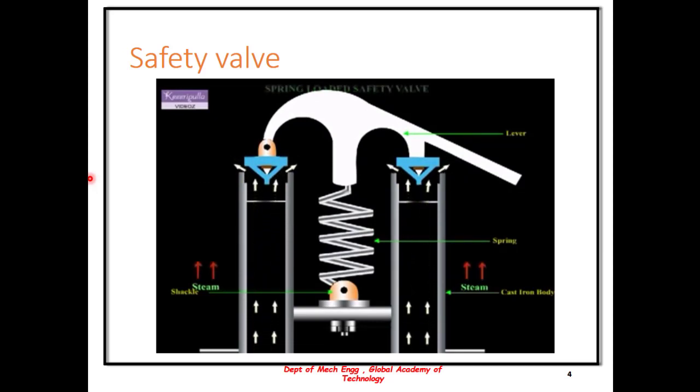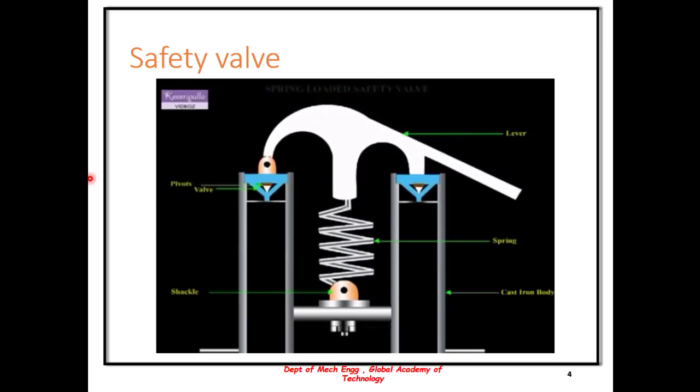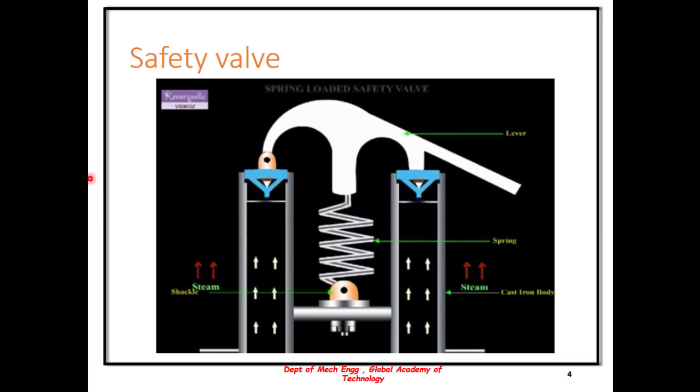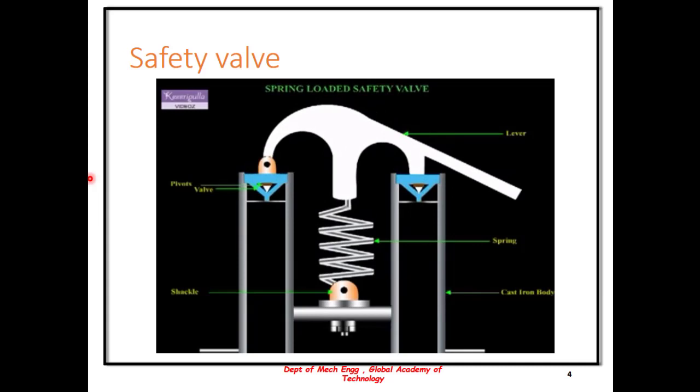The spring loaded safety valve is actuated when the steam pressure exceeds the safe working pressure. The valves rise up against the action of the spring due to the excess pressure of the steam inside the boiler and allow the steam to escape until the pressure drops to the safe working pressure. The spring loaded safety valve is much lighter and compact when compared to other safety valves, so it is preferred for locomotive and marine applications.